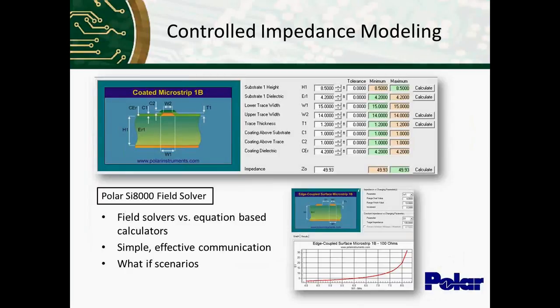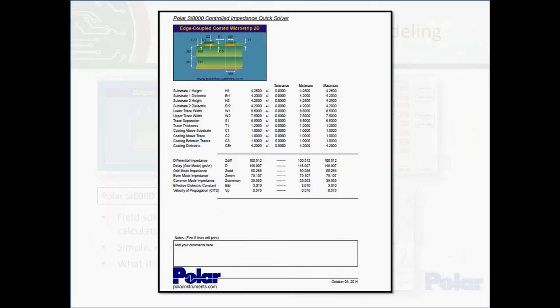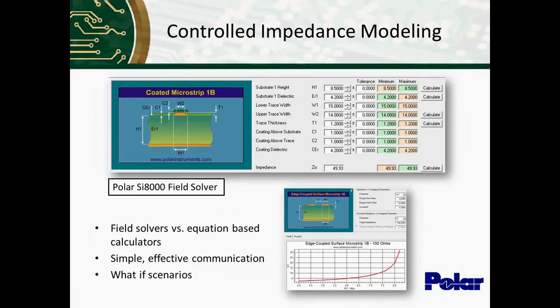The next point that is very important for dealing with controlled impedance modeling is simple and effective communication. So here's an example of what the printout looks like for the SI-8000. You see all the dimensions clearly labeled. There's tolerances, the target, and the calculated impedance.